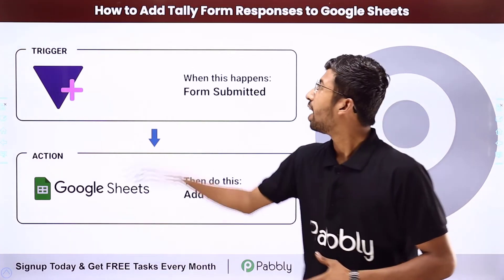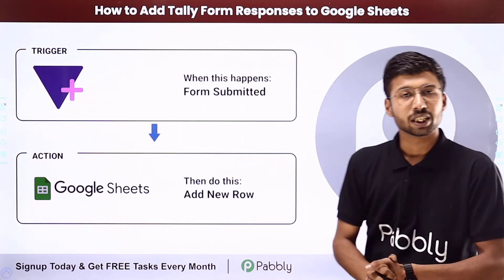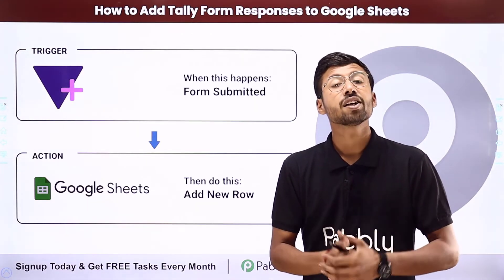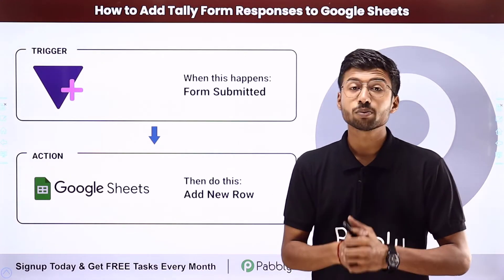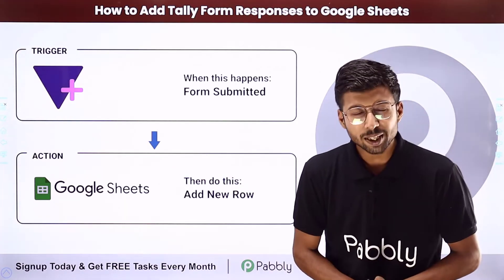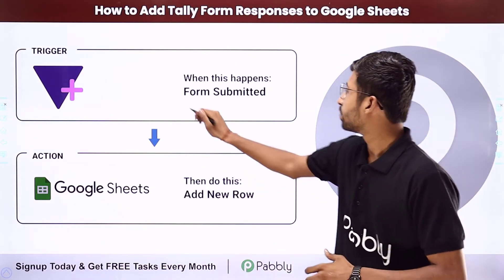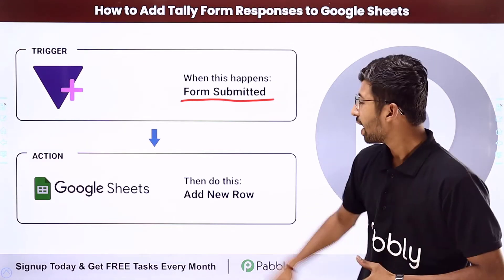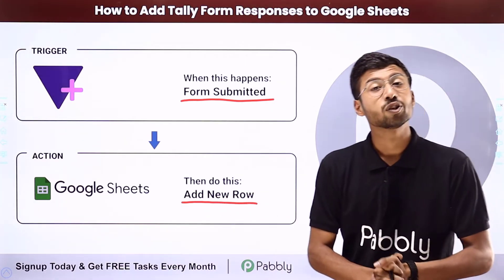In this video, we will learn how to add Tally form responses to Google Sheets. Suppose you have created a form using Tally and you want that whenever a user fills and submits the form, you want to take that form submission data and add it to Google Sheets. You can completely automate this process. The trigger of this automation will be receiving a form submission in Tally, and the action will be adding that form submission data as a new row in Google Sheets.